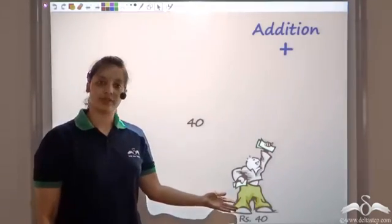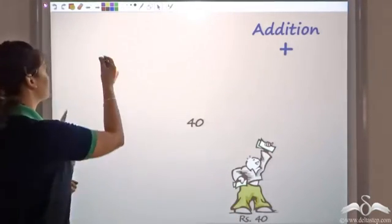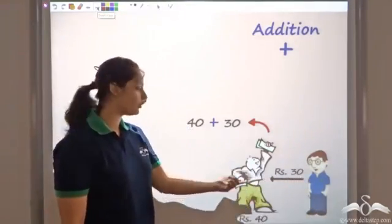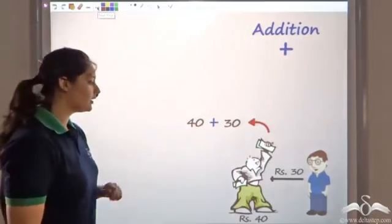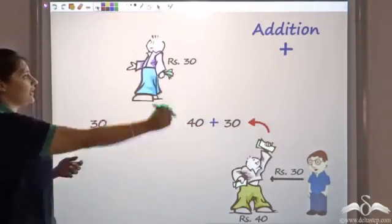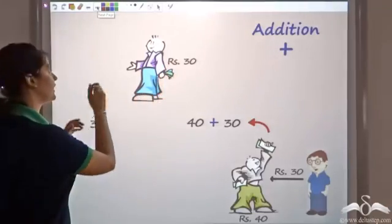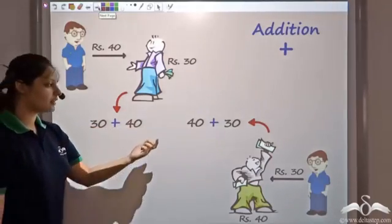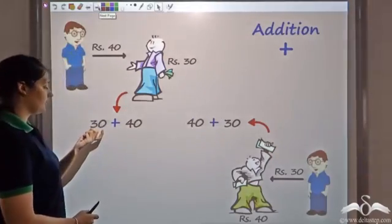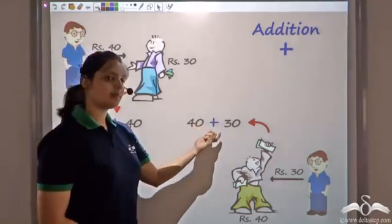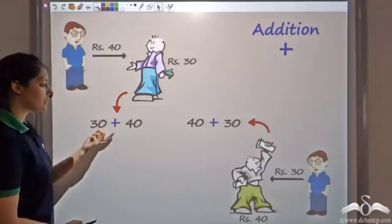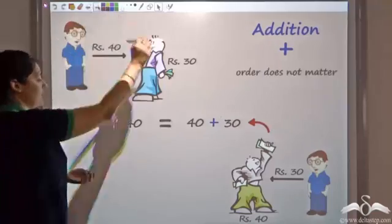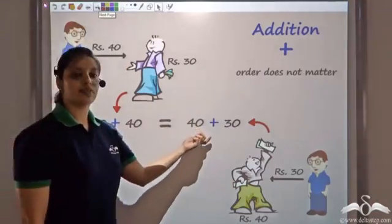Say you have 40 rupees and you were in need of money, so you ask your friend for some money and he gives you 30 rupees. You would have a total of 40 plus 30. Now let's change the situation: you had 30 rupees and your friend gives you 40, so you would have 30 plus 40. In both situations you get 30 plus 40 which is 70, and 40 plus 30 which is again 70 — you get the same amount.